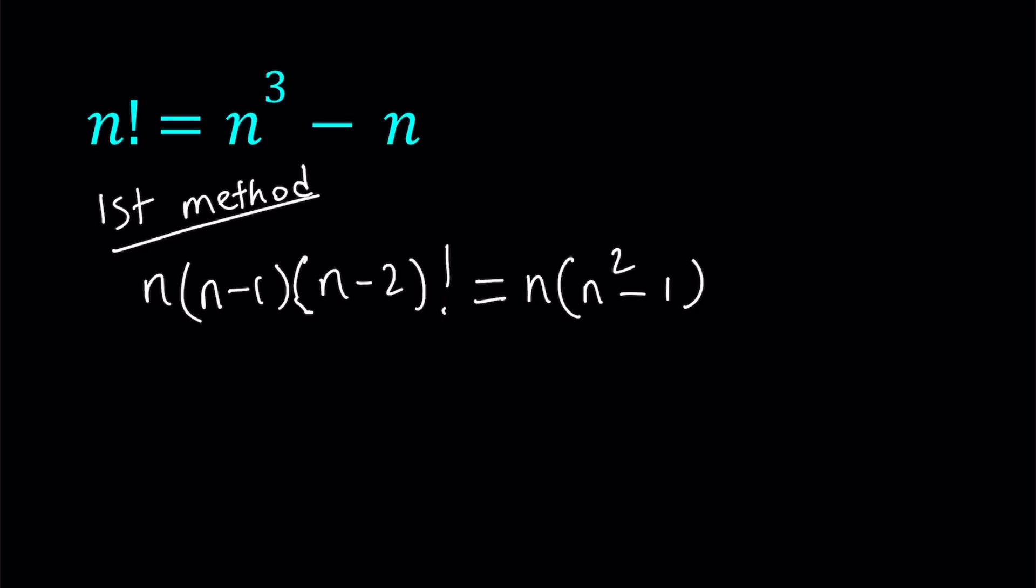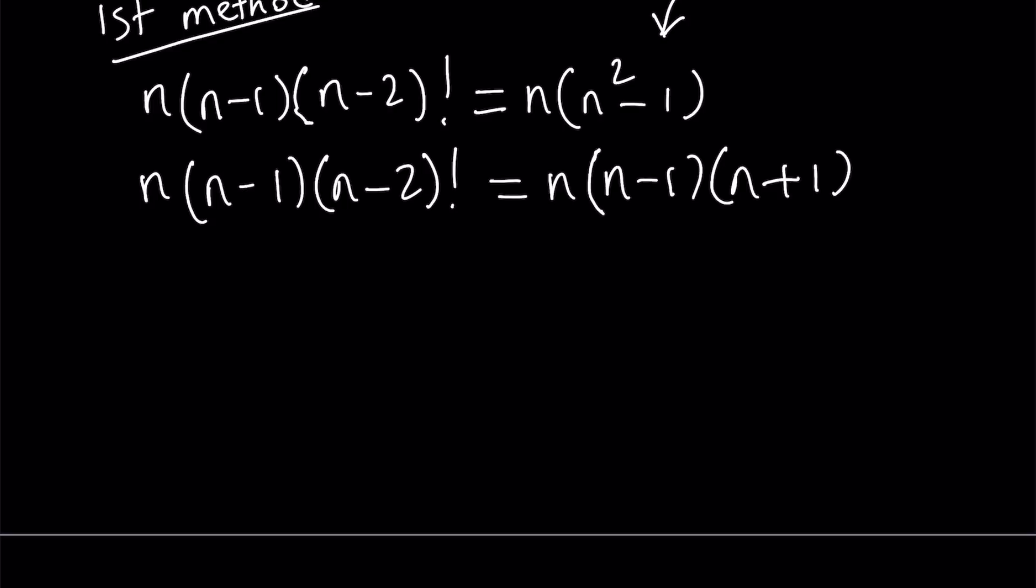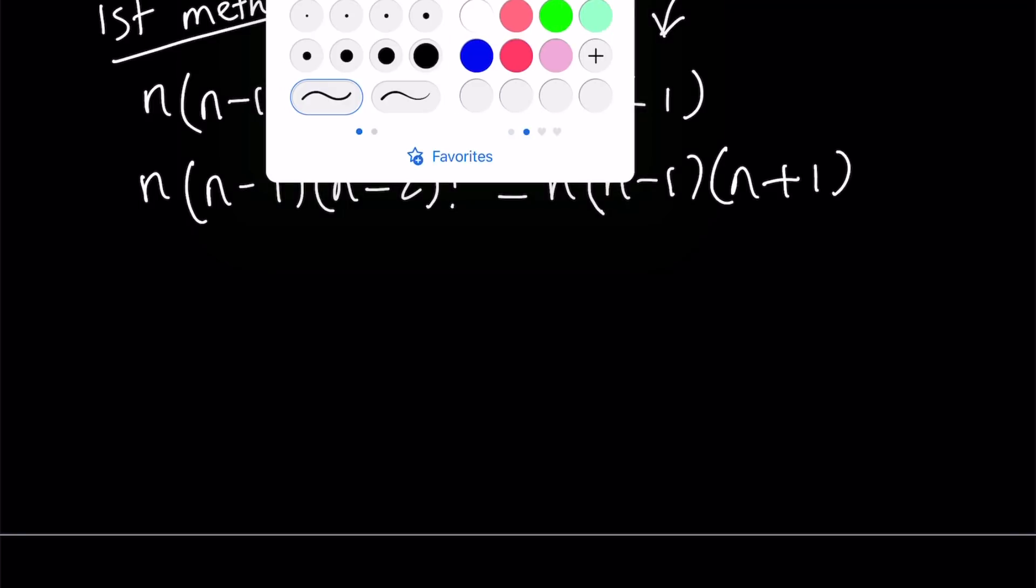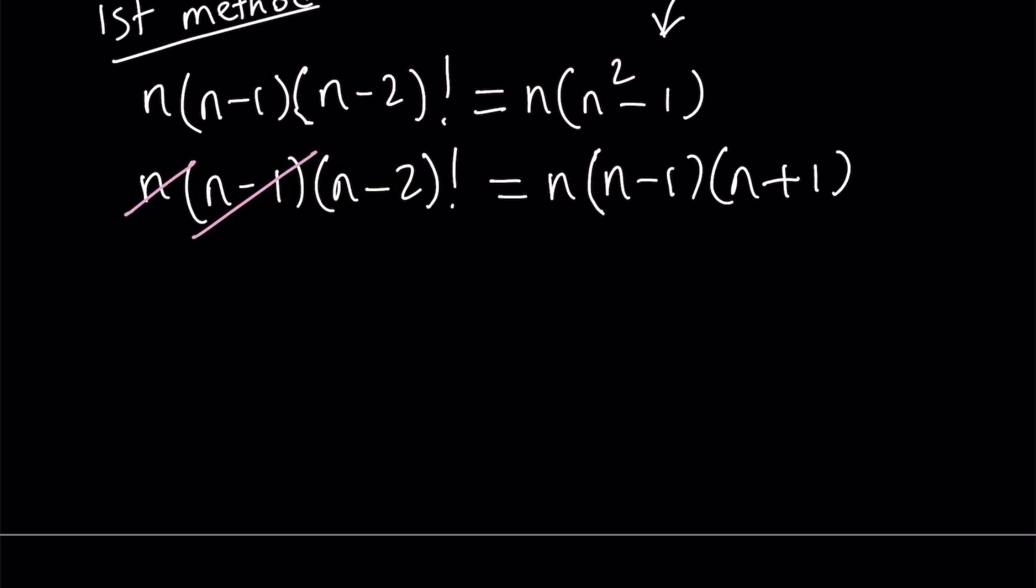The reason why I expand it all the way down to n minus 2 factorial is I'm going to be able to factor n squared minus 1 using difference of two squares, and then I'll simplify it. We can write this as n times n minus 1 times n plus 1. So here, n times n minus 1 cancels out. And we end up with a much nicer equation: n minus 2 factorial equals n plus 1.